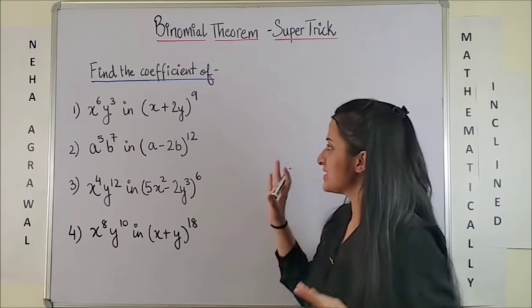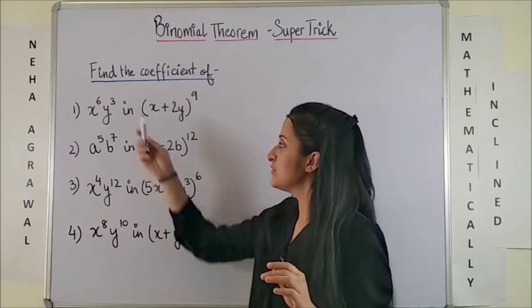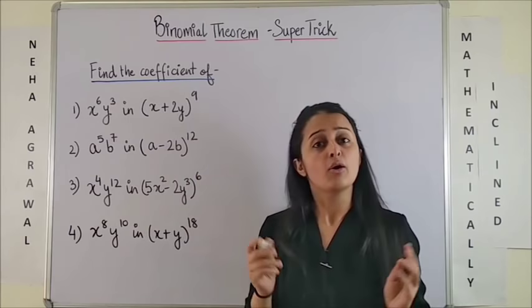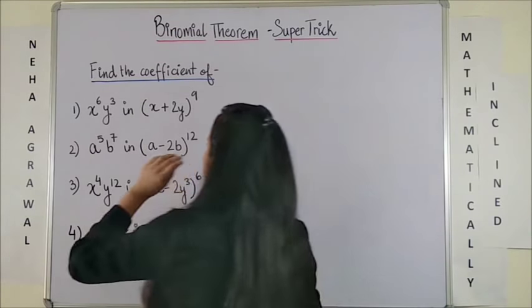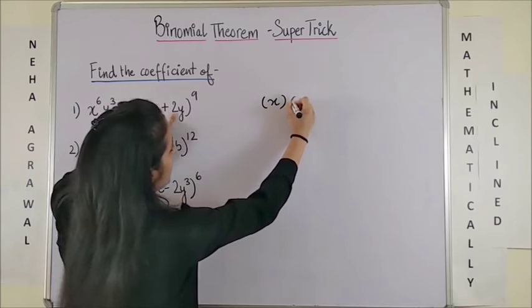So if you ever come across such questions where you see two variables getting involved and you have to find the coefficient of such terms, what do we do? Well, the simplest thing is you write the two terms which are part of the expansion.